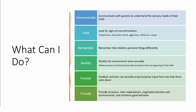Other organizing strategies include wiggle seats, foot fidgets, weighted vests, and arm squeezes — whatever works best for that child after you've modified the environment as much as possible. Outdoor activities can provide a lot of proprioceptive input to help children calm down. If a child is seeking movement and wanting to crash into things, give them a more appropriate space such as a playground where they can go down slides, run around, and fall in the mulch. Finally, providing structure, clear expectations, organized activities and environments, and reinforcing good behavior will all help to avoid overloading a child's sensory system.